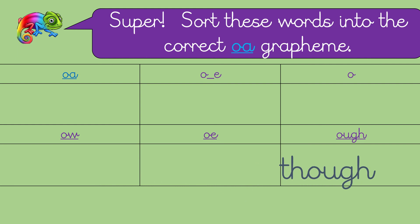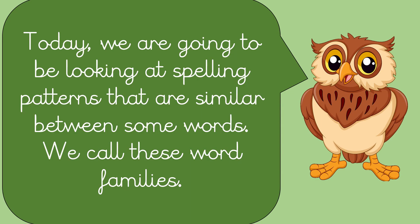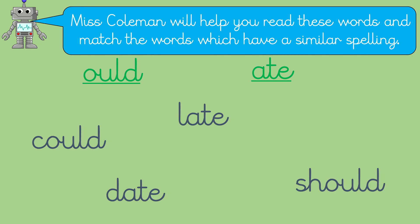Brilliant job everyone! Today we are going to be looking at spelling patterns that are similar between some words. We call these word families. So what does this say? Yes, come on, Miss Coleman will help you read these words and match the words which have a similar spelling. We're looking for words that have o-u-l-d in them, and this is like 'would' isn't it, or words that have the split digraph a-t-e in them, 'ate'.